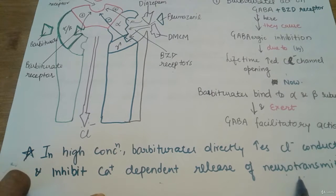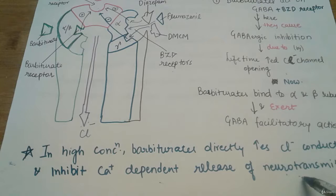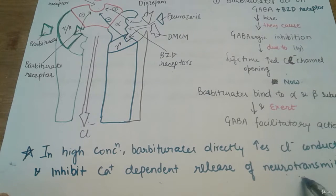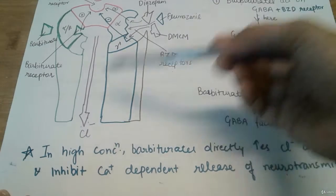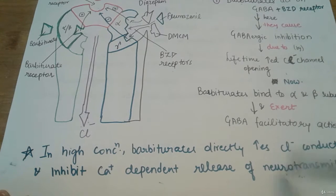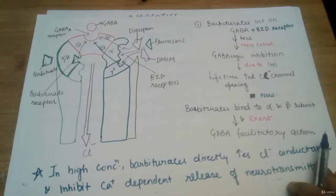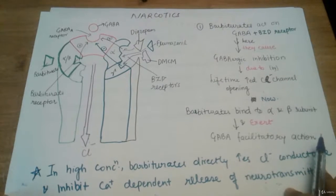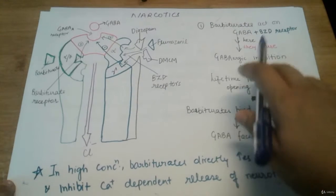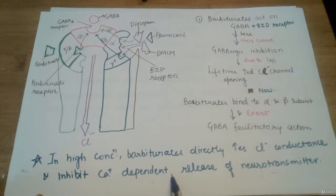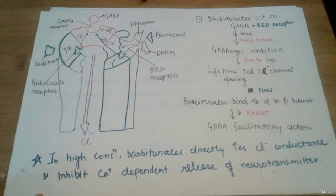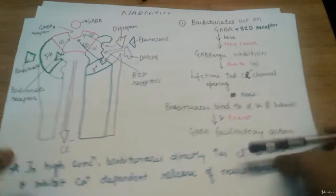Due to increased chloride concentration, calcium-dependent neurotransmitter release is inhibited. Neurotransmitters such as norepinephrine, which stimulate the central nervous system as discussed in the previous lecture, are inhibited. When they are inhibited, they cannot produce stimulant action, and the main action of barbiturates — to depress the central nervous system — is achieved. By this mechanism, the action of barbiturates is clarified.